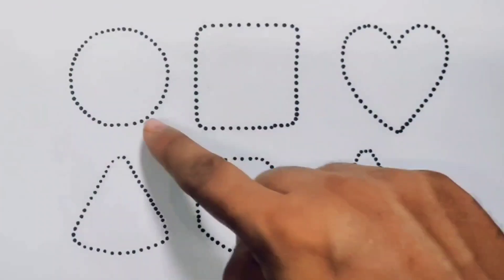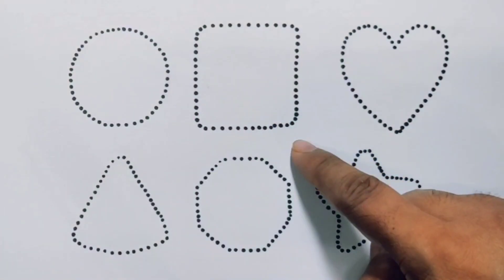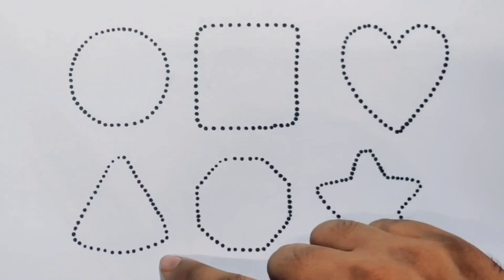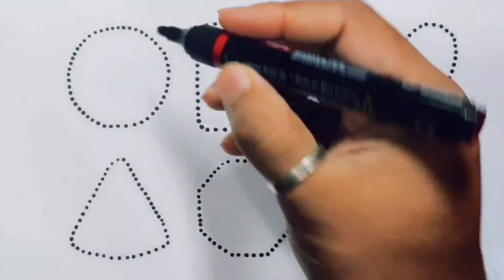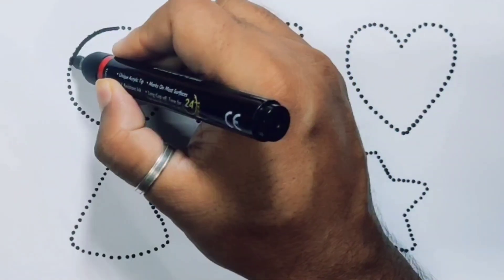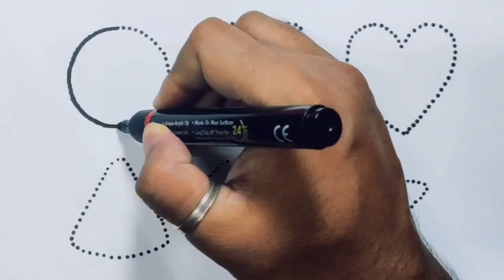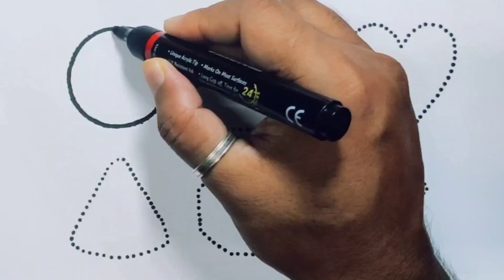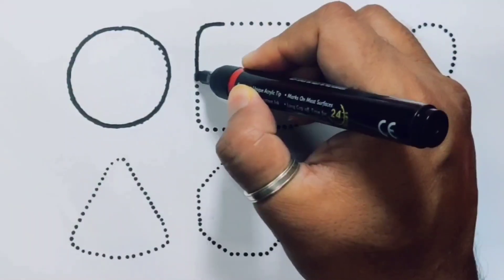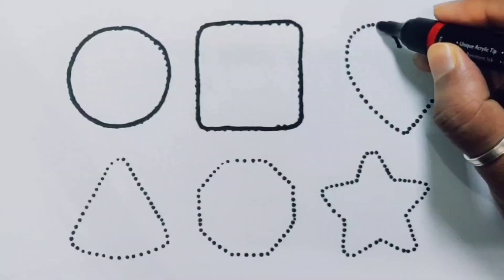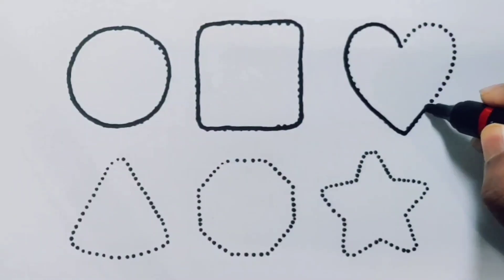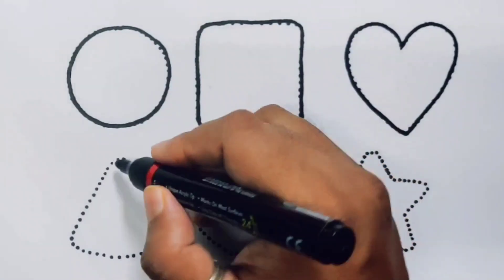Circle, square, heart, triangle, decagon, and star. First we're going to draw the shapes: circle, square, heart, triangle, decagon, and star.